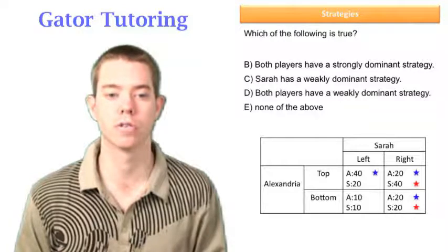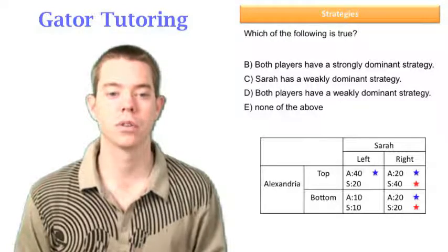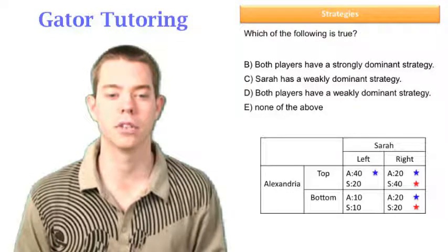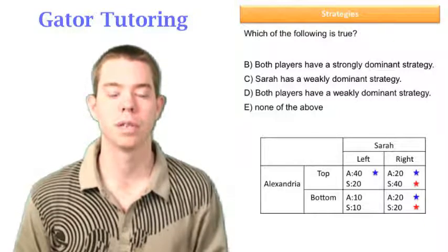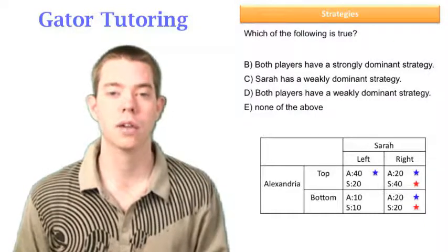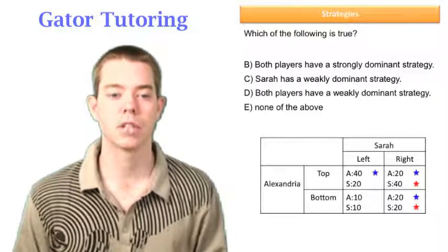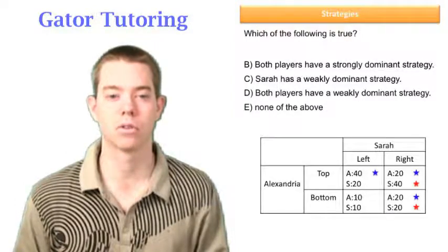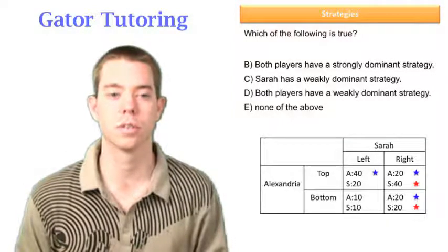B says both players have strongly dominant strategies. Well, Sarah does have a strongly dominant strategy. She's always going to pick right, because 40 is better than 20, and 20 is better than 10. But we just talked about Alexandria doesn't have a strongly dominant strategy. She has a weakly dominant, so we can cancel B out.